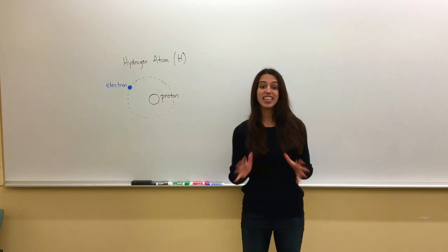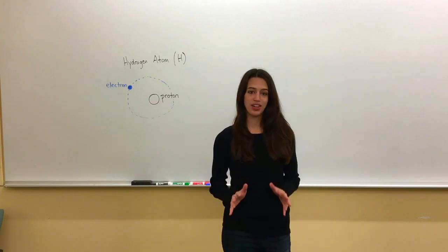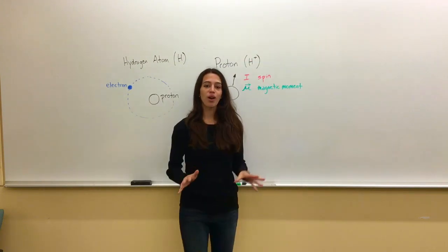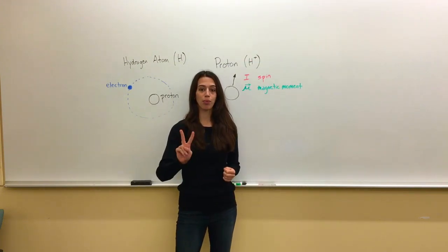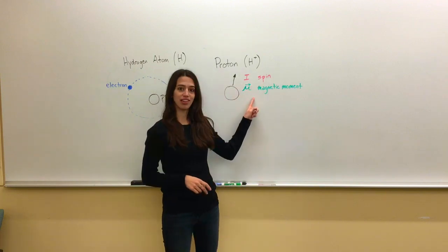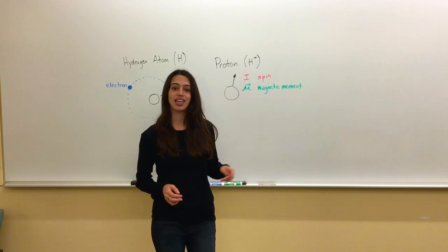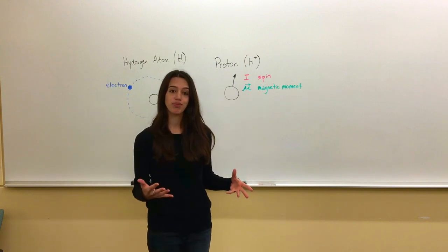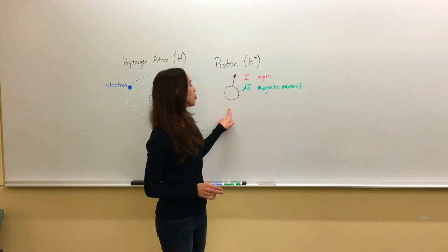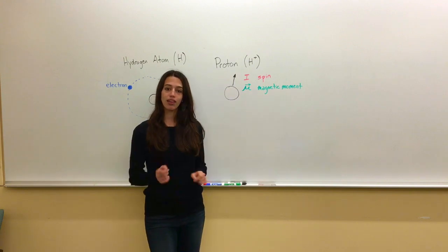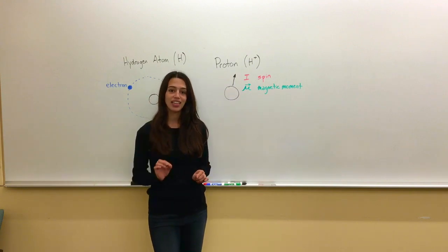Now this single proton is going to be the lead actor as we talk about magnetic resonance. Every proton has two properties: a spin and a magnetic moment. These are fundamental properties of this proton, just like mass or electric charge. Because this little proton has a magnetic moment, we can think of it like a little teeny tiny bar magnet.